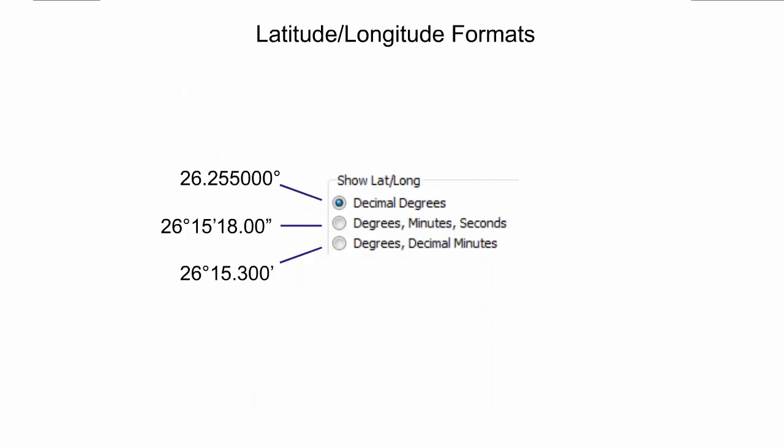Google Earth offers three formats to read out latitude and longitude angles of a point. The numbers shown here express the same latitude angle as decimal degrees, degrees minutes seconds, and degrees and decimal minutes.